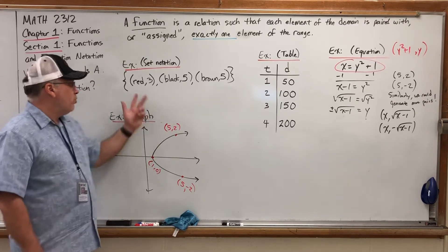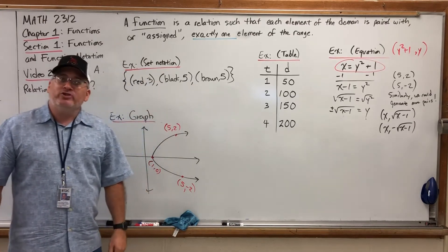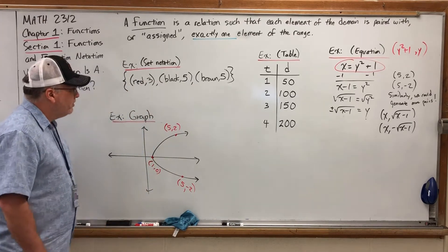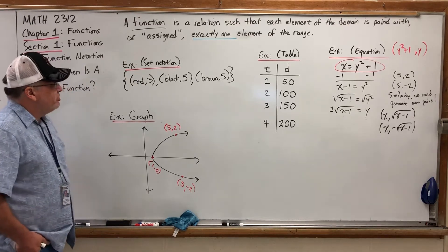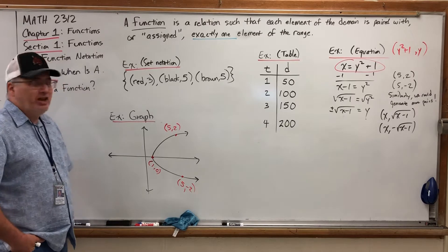Each element of the domain is paired with exactly one element of the range. So as we analyze these to answer the question, is it a function, it's the domain elements that we're scrutinizing. Let's start with the one where we paired the words red, black, and brown with the number of letters each one contained. Just glancing at it, do you think it's a function?